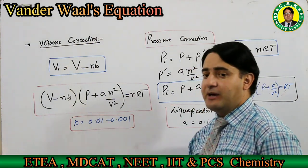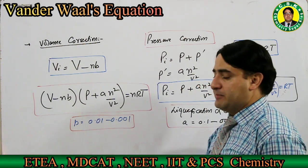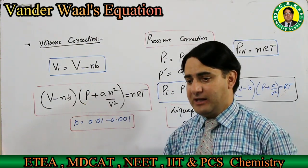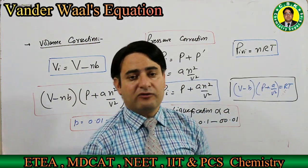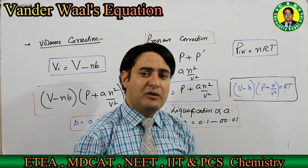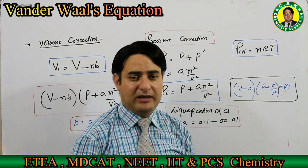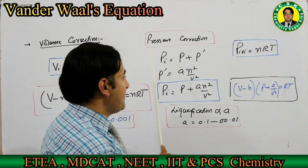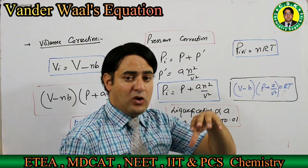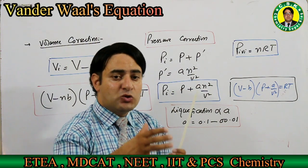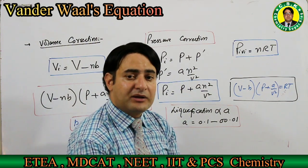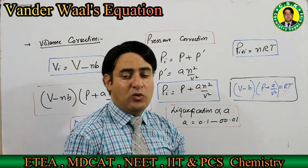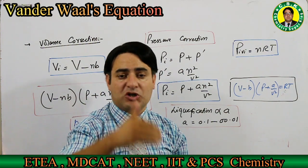For volume correction, the ideal volume of gas equals total volume minus nb, where n is the number of molecules and b is the volume of one molecule. So you subtract the volume of molecules from total volume to get the gas volume. Note: faulty postulate was pointed out in 1873 and equation was derived in 1879 — these are two different dates. For pressure correction: the pressure we observe is actually less because the attraction between gas molecules causes them to hit the container wall with less speed, reducing observed pressure.